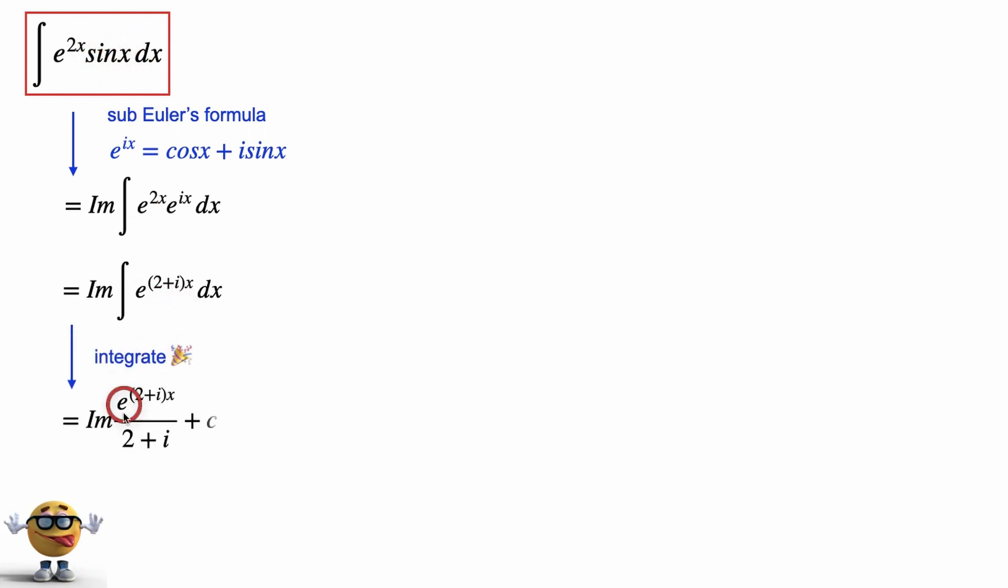So if we integrate this, it becomes the imaginary part of e to the power of 2 plus ix divided by 2 plus i plus our integration constant c.